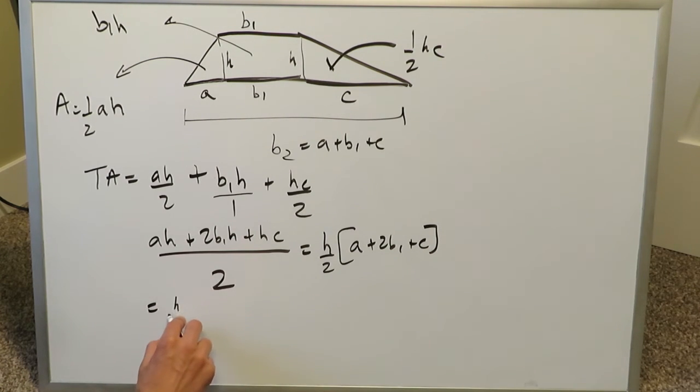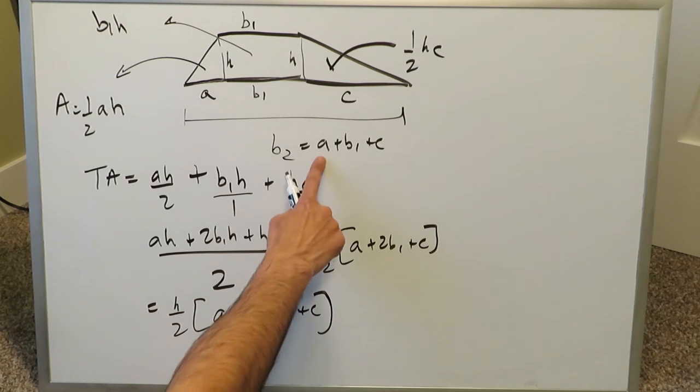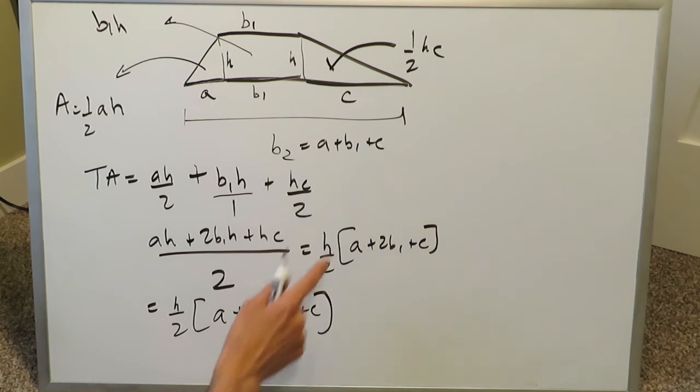If you look at this part in the parentheses, you can expand it out as such, h over 2, you have a plus b1 plus b1 plus c. But I've already told you here, a plus b1 plus c is equal to b2.